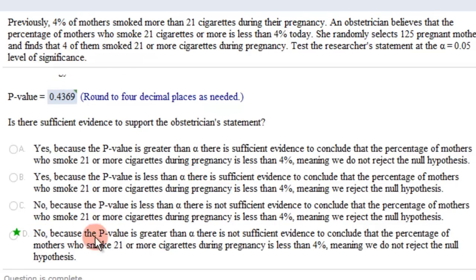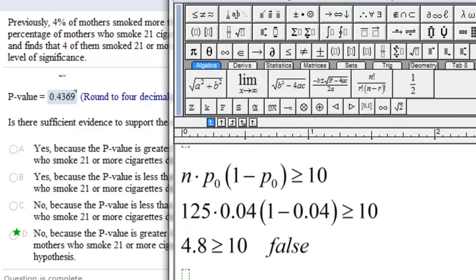So, no, because the p-value is greater than alpha, there's not sufficient evidence to conclude the percentage of mothers who smoke 21 or more cigarettes during pregnancy is less than 4%, meaning we do not reject the null hypothesis. So, this is only used when this inequality is not true. Then we go and use the binomial distribution.